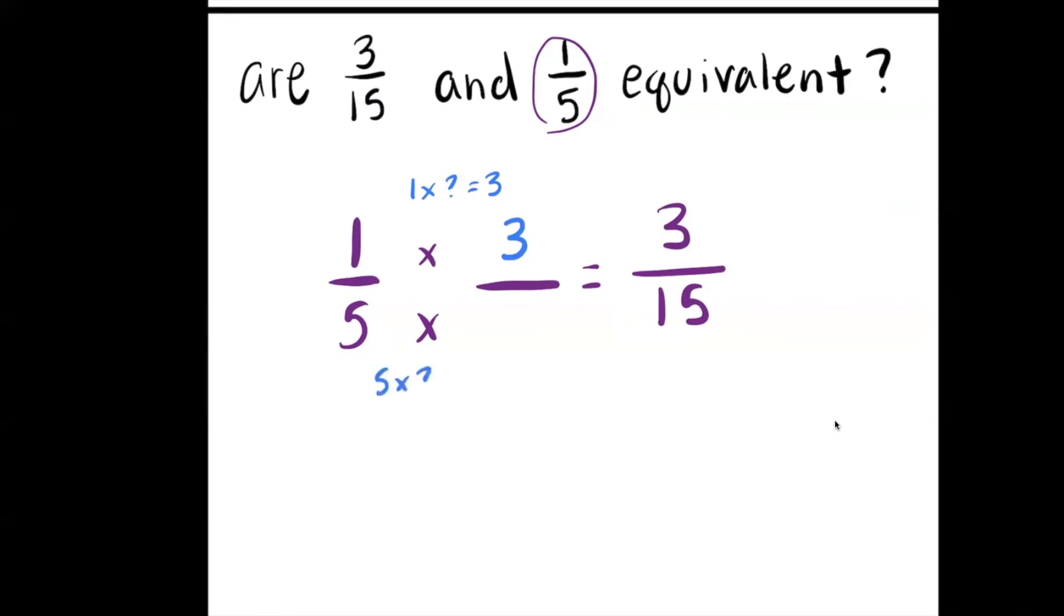5 multiplied by a number will get me 15. If I plug in 3 here and I skip count real quick, 5, 10, 15, that ends up being true. So I do end up getting my power of 1 there because I have 3 over 3. I meant to write 1. My bad. So I can conclude that 1 fifth is equivalent to 3 fifteenths.